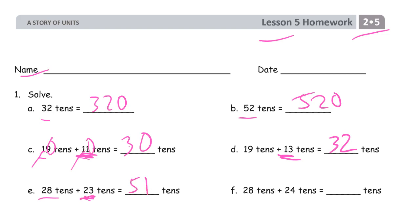And look here. 23 tens, 24 tens. We're starting with 28 tens for both of them. This will be one more set of tens, so that's 52 tens.